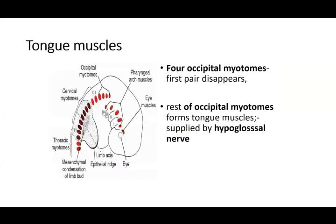Then are the muscles of the tongue. They come from the occipital myotomes — the first four occipital myotomes disappear; the remaining occipital myotomes, along with the cervical ones, give rise to the tongue muscles. These are supplied by the hypoglossal nerve. So when discussing tongue development, you must cover: the bulk from the arches, the mucous membrane, and the muscles.